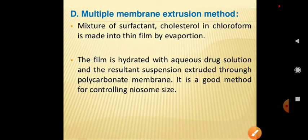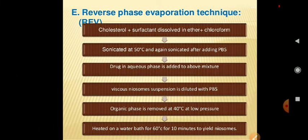Another method is the multiple membrane extrusion method. In this method, a mixture of surfactant, cholesterol, and chloroform is made into a thin film by evaporation. This film is hydrated with aqueous drug solution, and the resultant suspension is extruded through a polycarbonate membrane. It is a good and mostly used method for controlling niosome size.